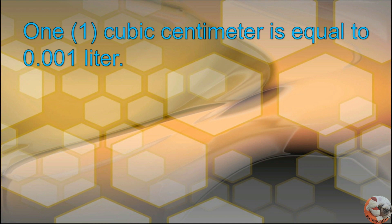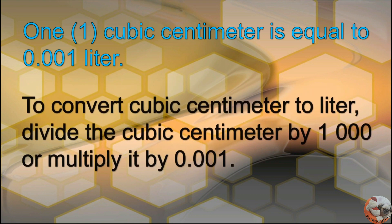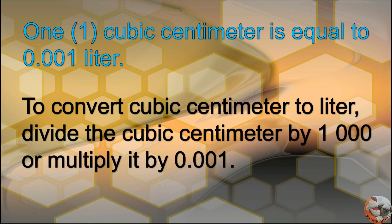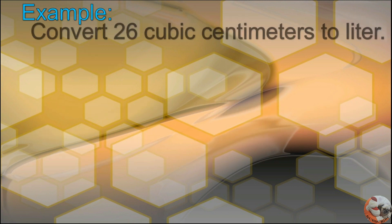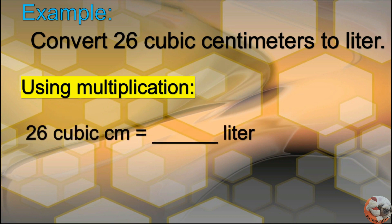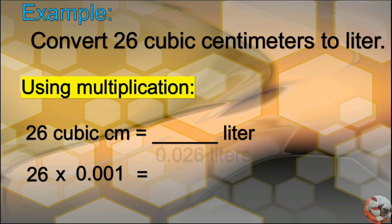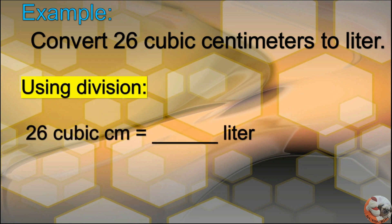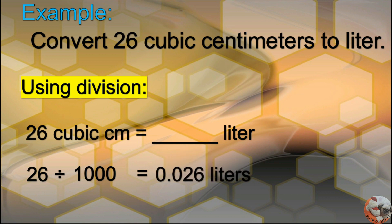1 cubic centimeter is equal to one-thousandth of a liter. To convert cubic centimeters to liters, divide the cubic centimeter value by 1,000. Example: convert 26 cubic centimeters to liters. Using division: 26 divided by 1,000 equals 0.026 liters.